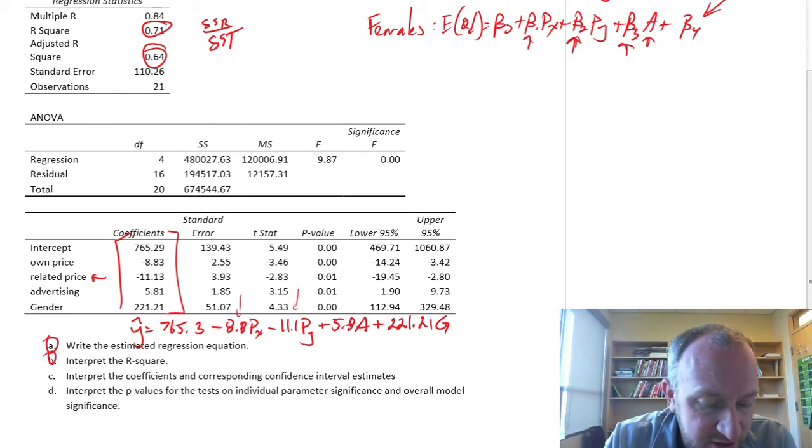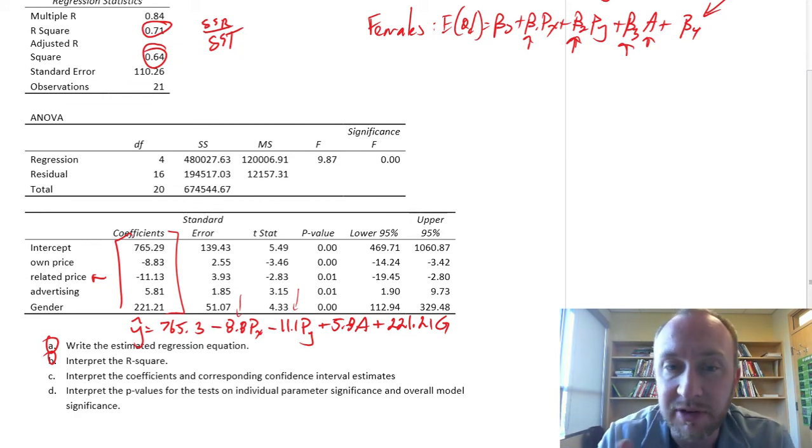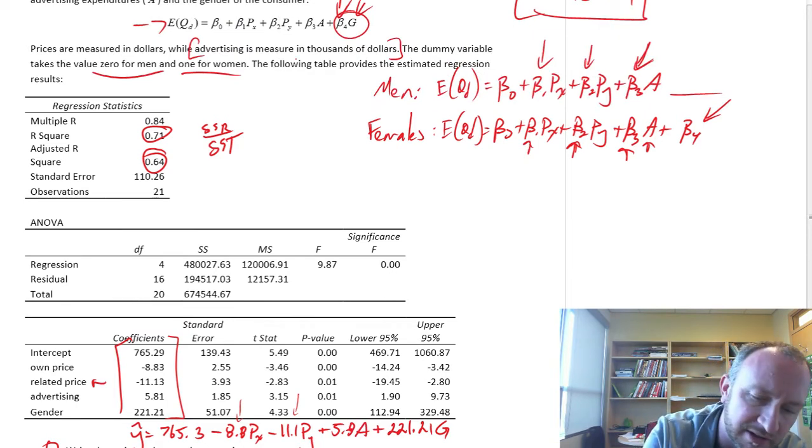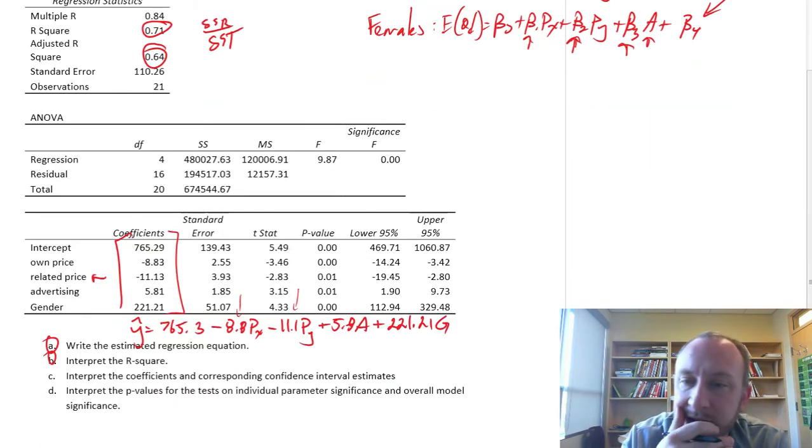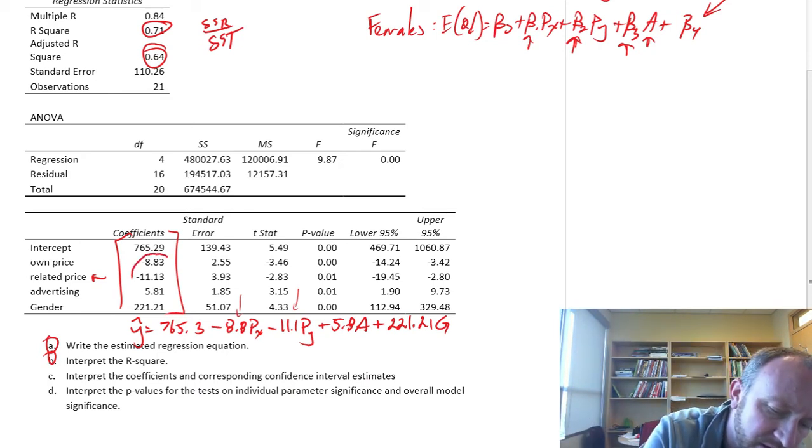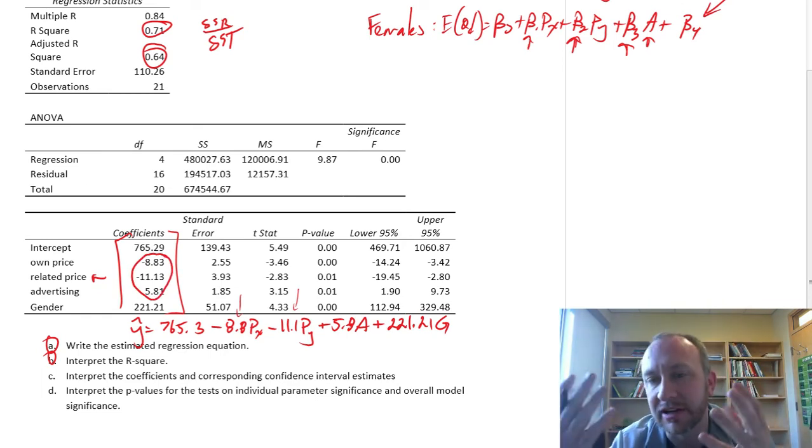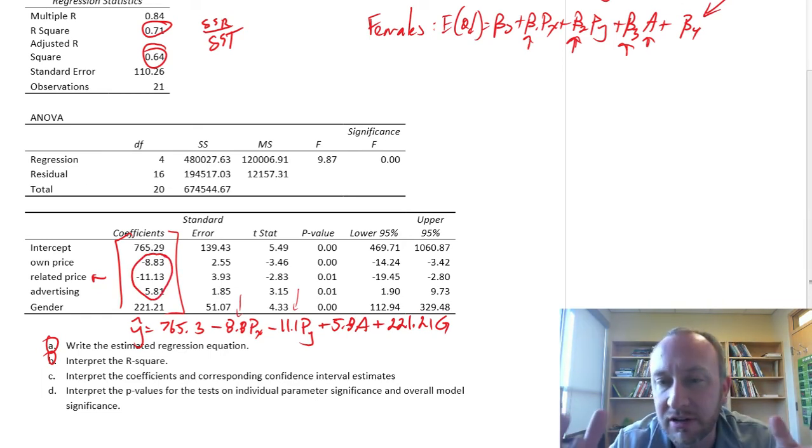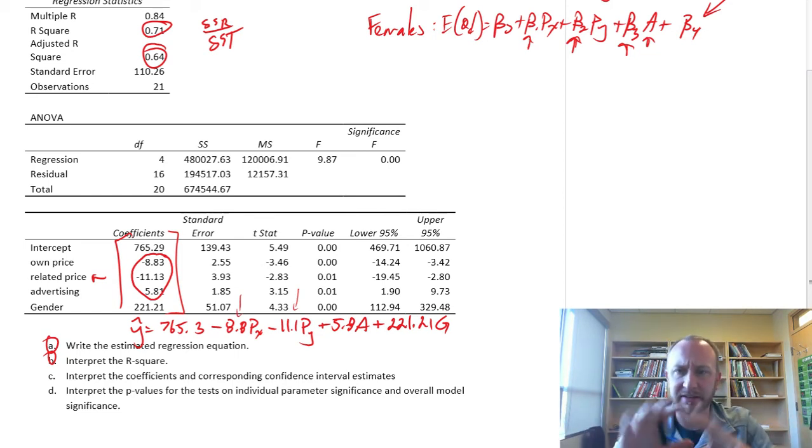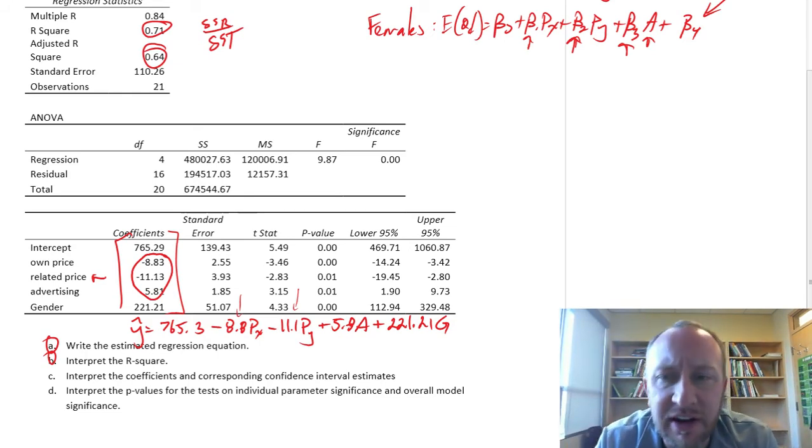Advertising expenditure: for each thousand dollars that we spend on advertising, quantity demanded goes up by 5.8 units. Notice so far for each of those three, I've said for each dollar change or each thousand dollar increase. Now when we get to the dummy variable, there's no more each. You're either male or you're female.